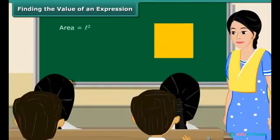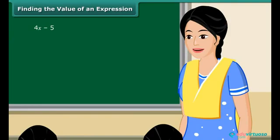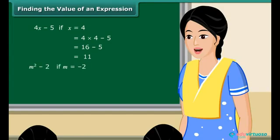Consider a square with area equal to l². If the value of l is 4 cm, then the area is 16 cm². There are many situations where we need to find the value of an expression. For the expression 4x − 5, if x = 4, then the value is 4 × 4 − 5 = 16 − 5 = 11. Similarly, if m = −2, then the value of the expression m² − 2 will be equal to 2.